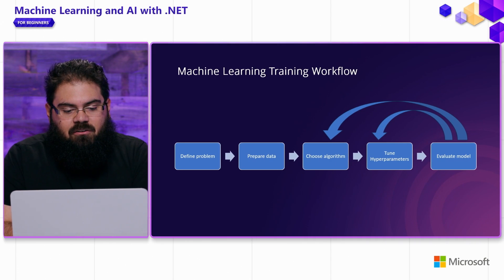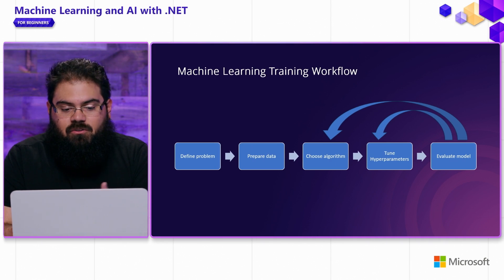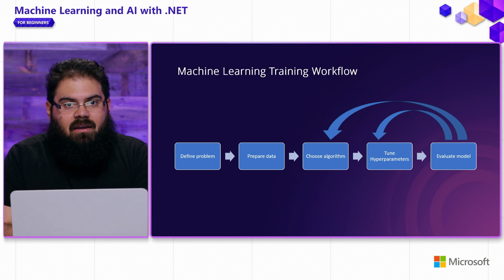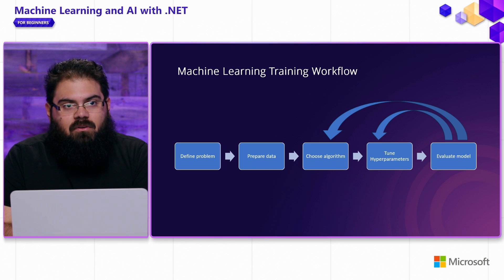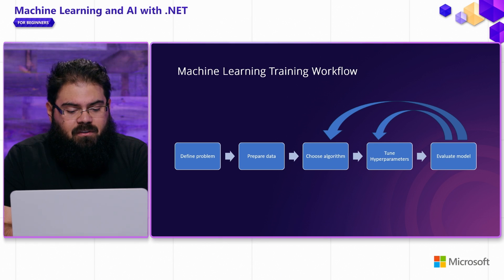If we take a look at the machine learning training workflow, it typically looks like this. You often start out with a problem that you want to solve — this can be something like forecasting sales, or building an automated system that's going to triage and classify customer issues. Once you have your problem, you want to get data that's going to help you train this machine learning model. This prepared data step usually involves things like merging data from different sources, getting rid of duplicates, getting rid of missing values.